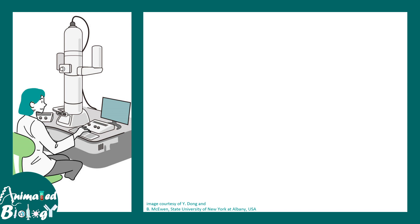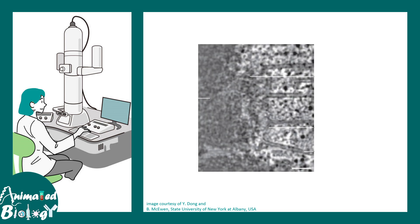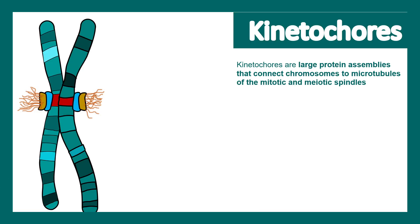What we know today about kinetochores came from electron microscopic observations in the early 1970s. Looking at this blurry picture from electron microscopy, one can understand there are at least three different layers, and these are some microtubules in this electron micrograph. With further development of proteomic technologies, it is now known there are several hundreds of proteins associated in the kinetochore region.